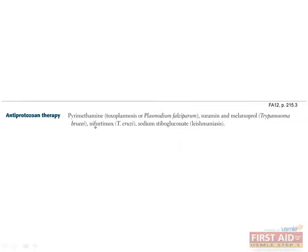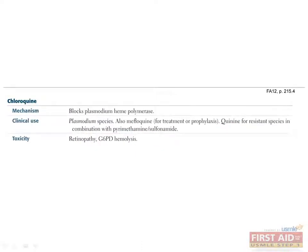Here are a few drugs useful for fighting protozoan infections. Pyrimethamine is useful against Plasmodium falciparum, and is also the drug of choice for toxoplasmosis when combined with sulfadiazine. Suramin and melarsoprol can treat Trypanosoma brucei infections. Nifurtimox is toxic to Trypanosoma cruzi, and sodium stibogluconate is useful against leishmaniasis. Chloroquine is used to treat malaria; it functions by blocking the heme polymerase enzyme of plasmodium. Due to resistance against chloroquine in many parts of the world, mefloquine is used with increasing frequency for prophylaxis and treatment.